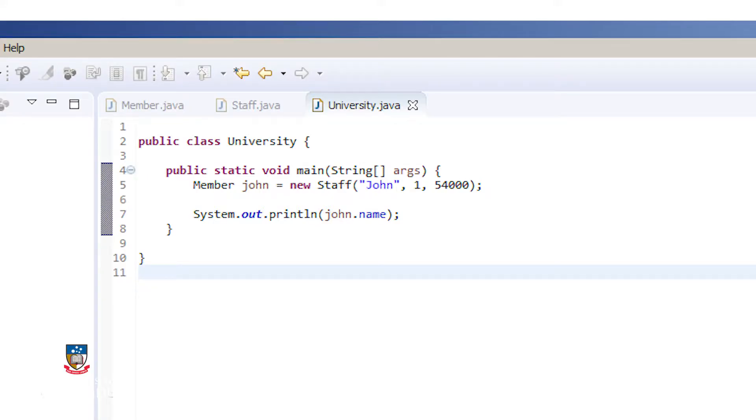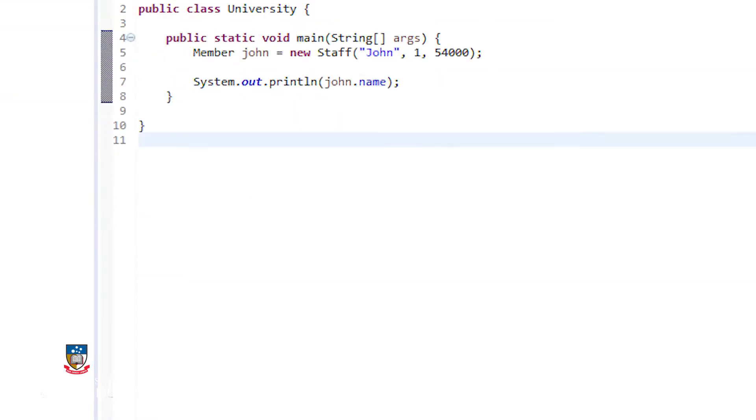The member constructor sets the name and ID variables, while the staff constructor additionally sets the salary variable. I want my main function to print out the name of the staff member, so I have added a print statement into the main function. Now, I compile and then run my program to check that it is working as expected. Perfect!